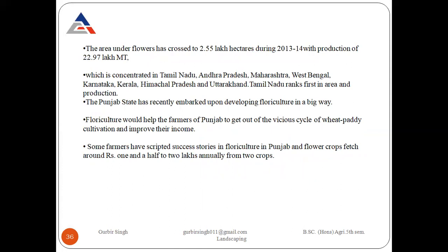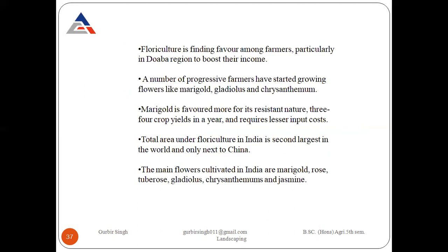The Punjab state has recently embarked on developing floriculture in a big way. Floriculture would help the farmers of Punjab get out of the vicious cycle of wheat-paddy cultivation and improve their income. Some farmers have shared successful stories in floriculture, and flower crops fetch around Rs. 1.5 to 2 lakh annually from two crops. Progressive farmers have started growing flowers like marigold, gladiolus, and chrysanthemum. Marigold is favoured for its resistant nature, giving 3-4 crop yields in a year and requiring less input cost.